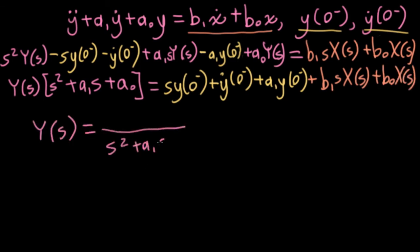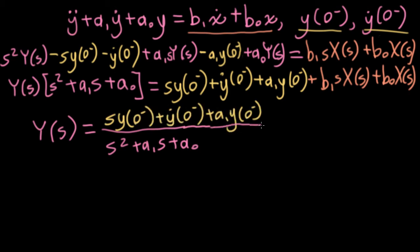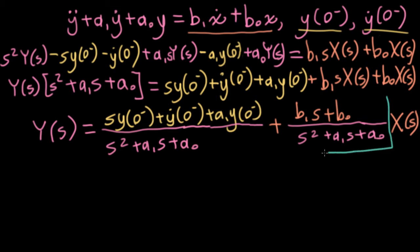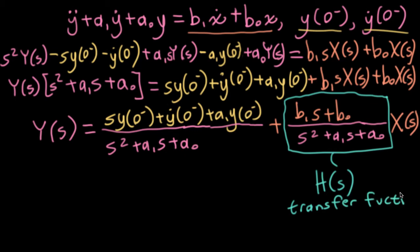Now I can get y of s by itself by dividing both sides of the expression by s squared plus a1s plus a0. And the way I'm going to write this is I'm going to put the big x of s over here. And the reason I want to do that is I want to put a big box around all of this stuff multiplying big x of s, and I want to call it something. I want to call it big h of s, and I want to call it either a transfer function, which I think is the most common term, or I want to call it a system function, which is the kind of term that the ECE 2026 textbook uses.